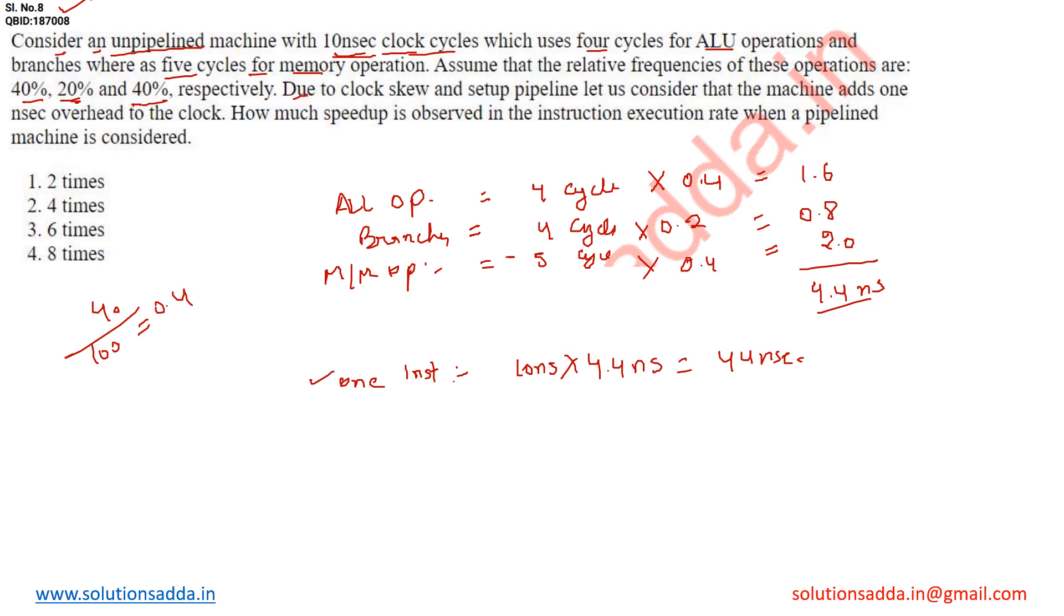Now due to clock skew and setup pipeline, the machine adds 1 nanosecond overhead to the clock. Here you can observe we're setting up the pipeline. We're converting this unpipelined machine into pipeline, which requires an additional 1 nanosecond overhead.